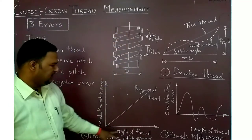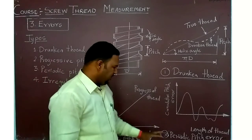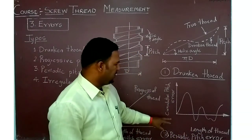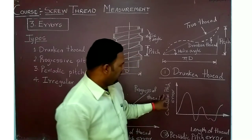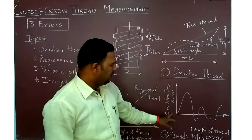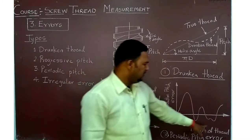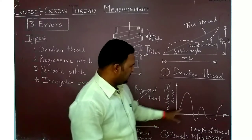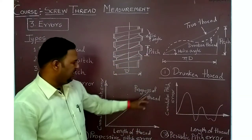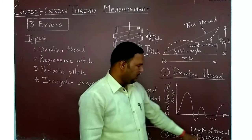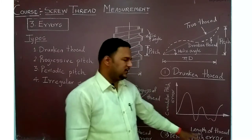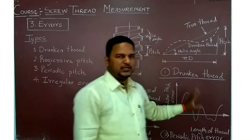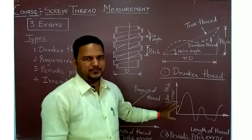Next, we have periodic pitch error. For periodic pitch error, similarly the y-axis shows cumulative pitch error and the x-axis shows length of thread. But instead of increasing linearly, the graph shows periodic ups and downs — a repeating oscillating pattern.